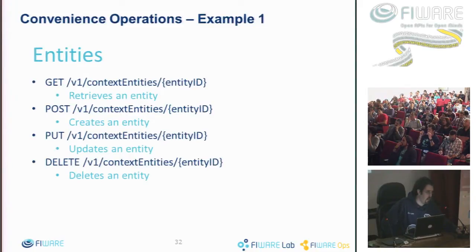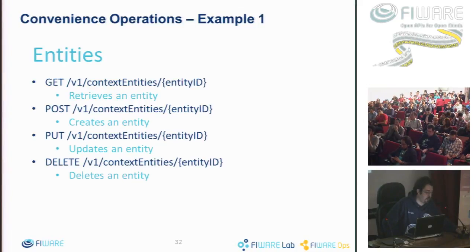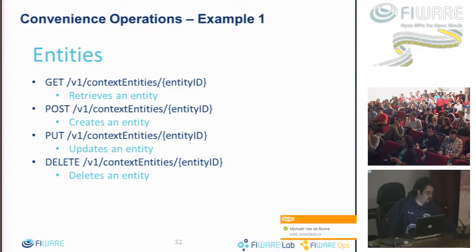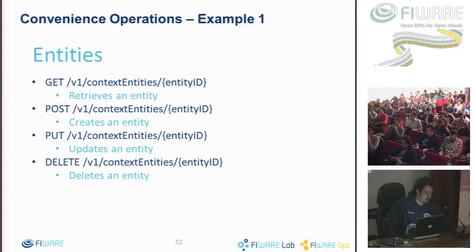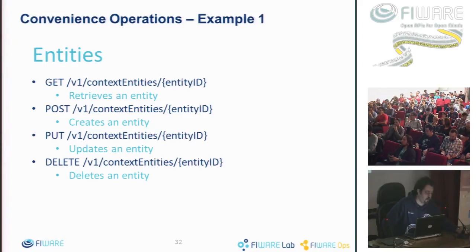For entities, there are four operations. First, a GET to retrieve the entity resource. Second, a POST to create new entities — the correct verb for that kind of operation. Third, a PUT to update existing resources. And finally, DELETE to remove a resource. The URL structure uses the prefix v1/contextEntities, and the next token after the slash is the entity ID.